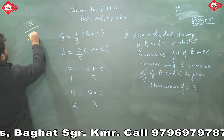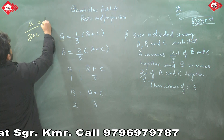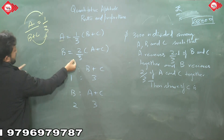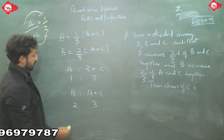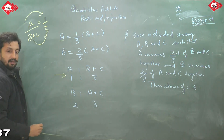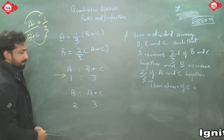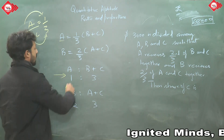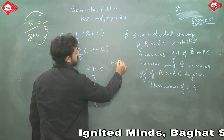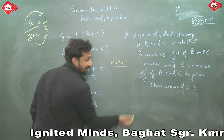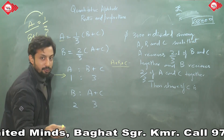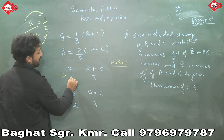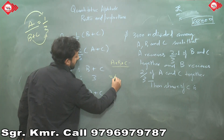From equation 1: A is 1 part and B+C is 3 parts, so A+B+C = 4 parts. From equation 2: B is 2 parts and A+C is 3 parts, so A+B+C = 5 parts. Since A+B+C must be the same total, we find the LCM of 4 and 5, which is 20. Multiply equation 1 by 5 and equation 2 by 4 to make both totals equal to 20.